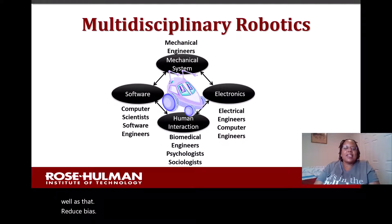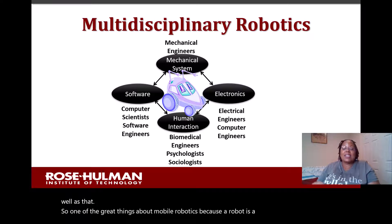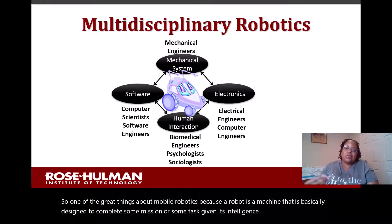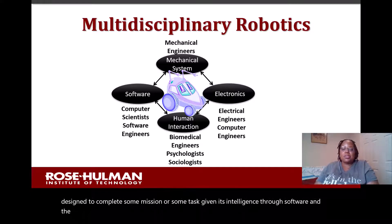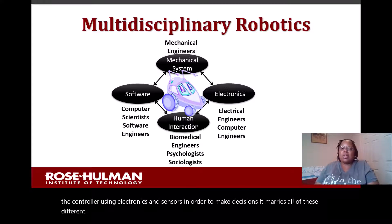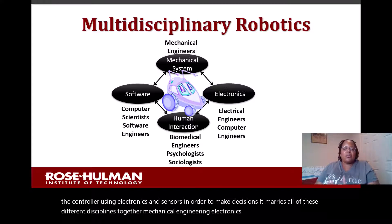One of the great things about mobile robotics is that a robot is a machine basically designed to complete some mission or task, given its intelligence through software and the controller using electronics and sensors to make decisions. It marries all of these different disciplines together — like mechanical engineering, electronics, software, human interaction, human-robot interaction, and all these multiple disciplines.